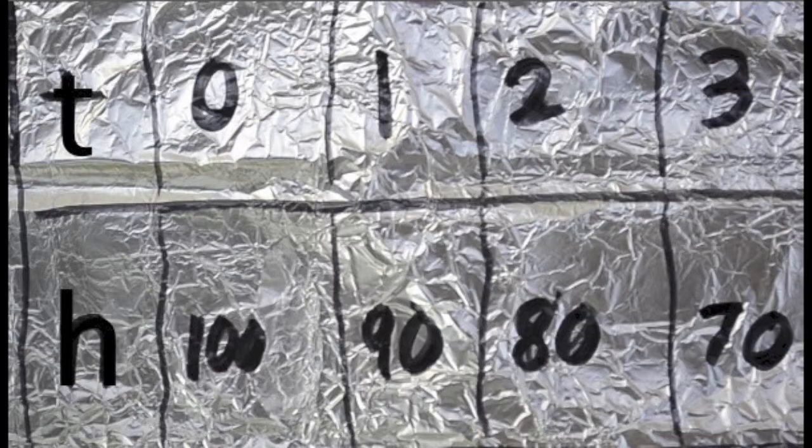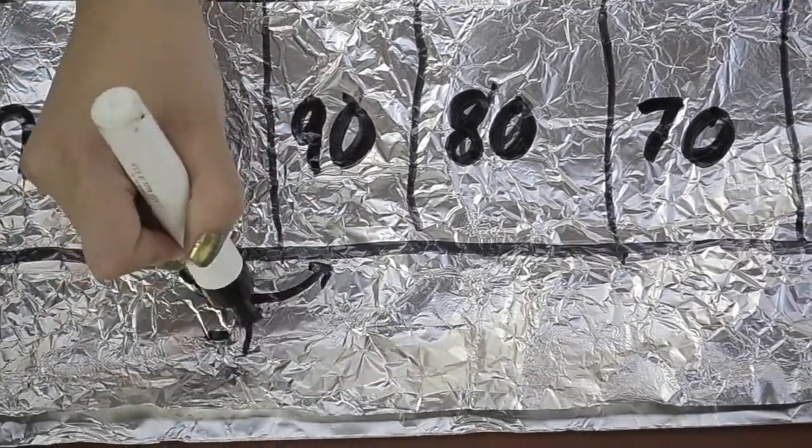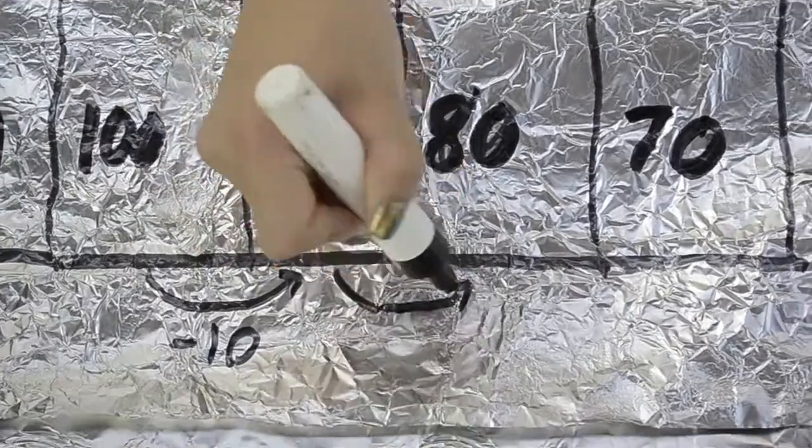The parachute is at 100 feet at zero minutes. She decreases 10 feet in height every minute.